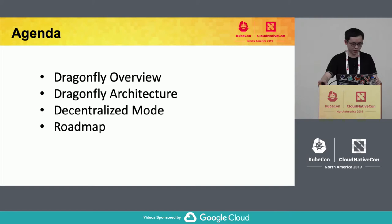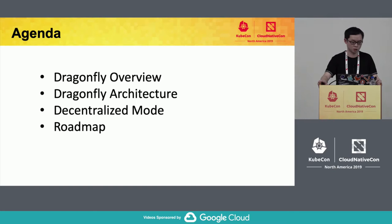Today's agenda has four parts. The first part is Dragonfly overview — what is Dragonfly and its history. In the second part, I will talk about Dragonfly's architecture and how the components work together. In the third part, I will introduce our design for the decentralized mode. In the last part, I will tell you about our future work and the roadmap.